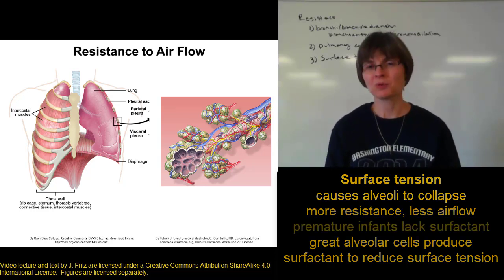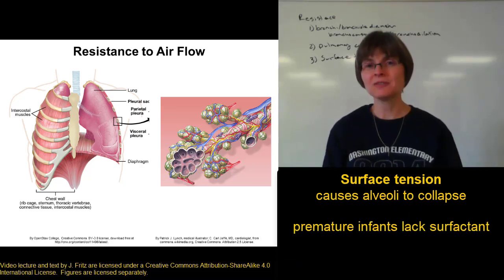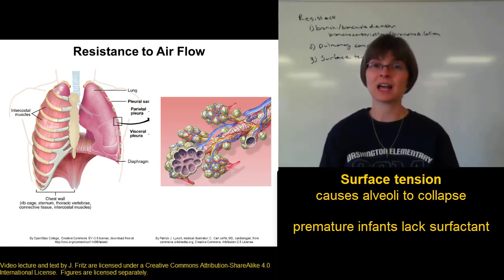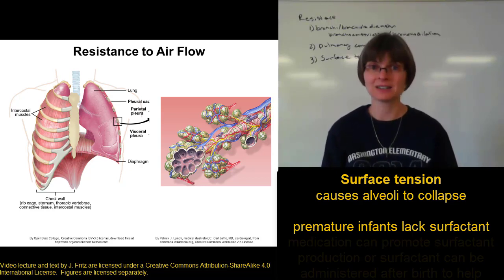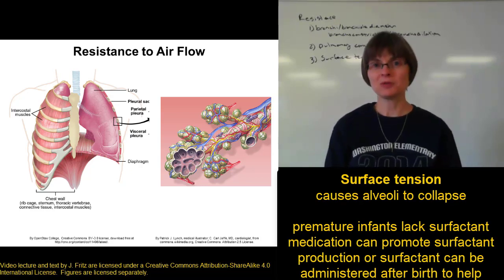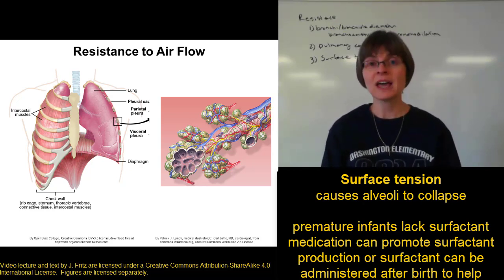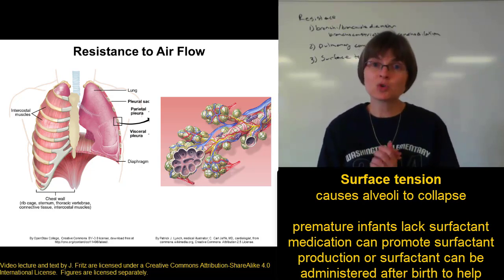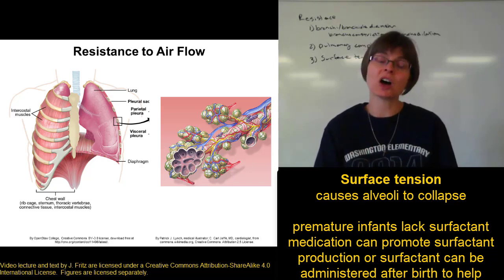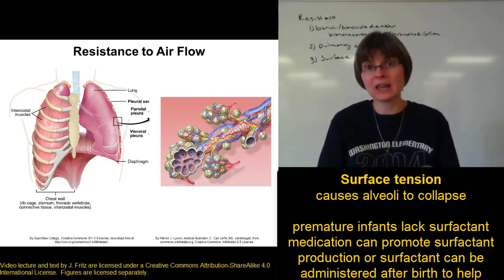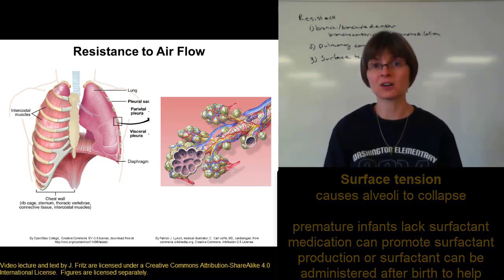One of the problems with premature infants is that their lungs haven't matured enough to produce a lot of surfactant. If a baby is born very early, they don't have much surfactant in their lungs, making it incredibly hard for them to overcome the resistance needed to pull air in.